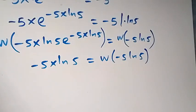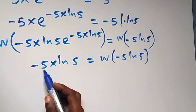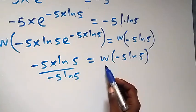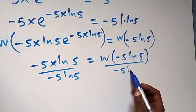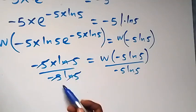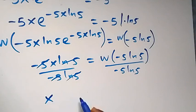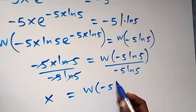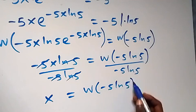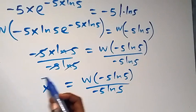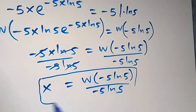Then from here, to get x, we divide both sides by minus 5 ln 5. This cancels out, and we are left with x, which will be equal to W(minus 5 ln 5) over minus 5 ln 5. So here we have the value of x in the first case.